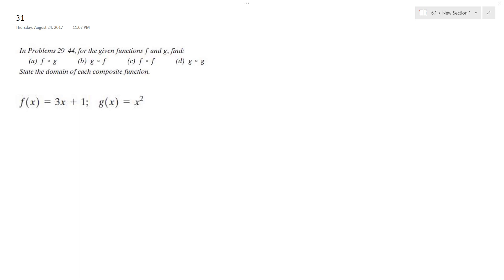So what we have here, we've got a composite function combined. Starting off with f∘g, we get 3 times quantity x squared plus 1, so 3x² plus 1. Alright, so that's part a.